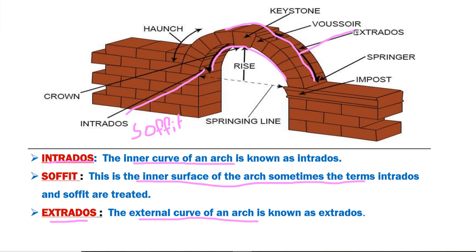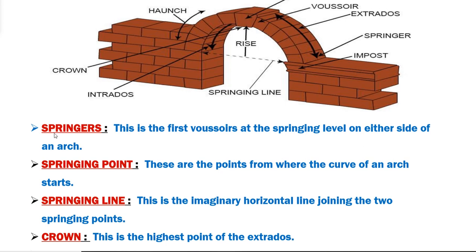The next component part is springers. Springers is the first voussoir at the springing level on either side of an arch. In this image we can see the first voussoir which is on the springing level. The first voussoir is known as a springer.